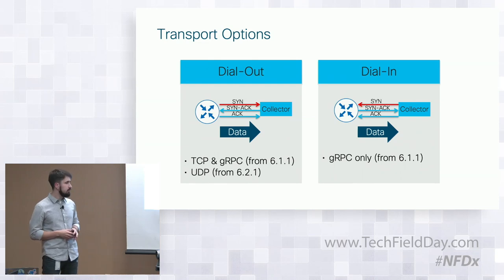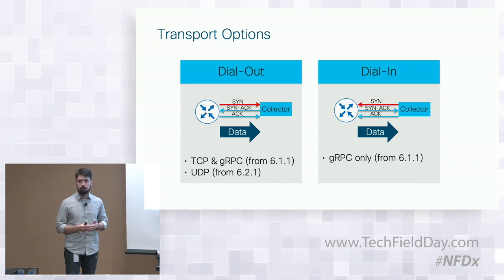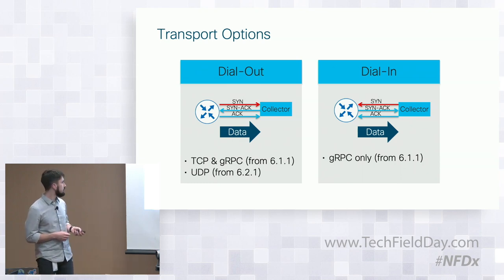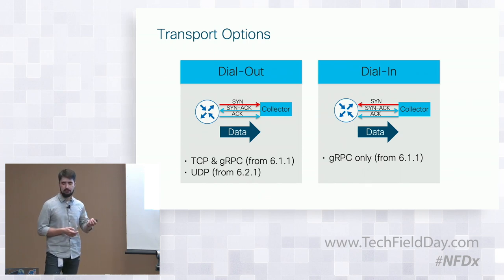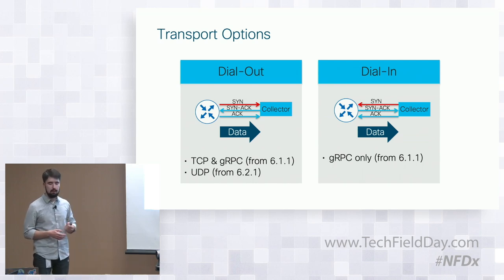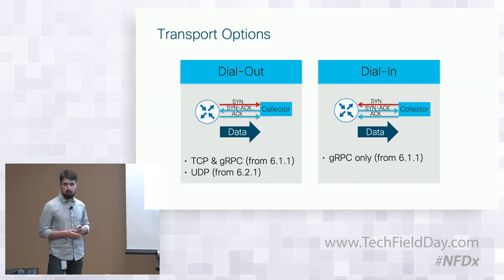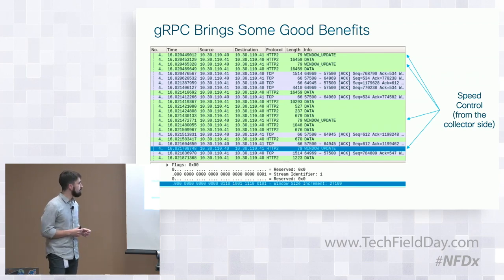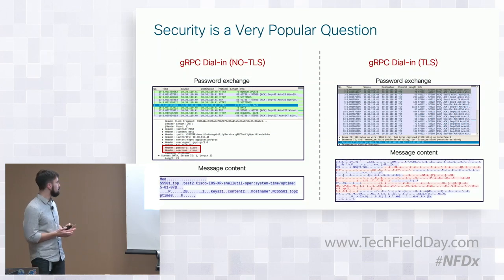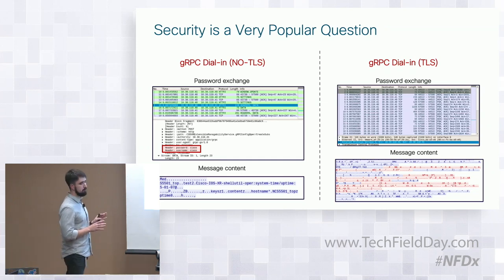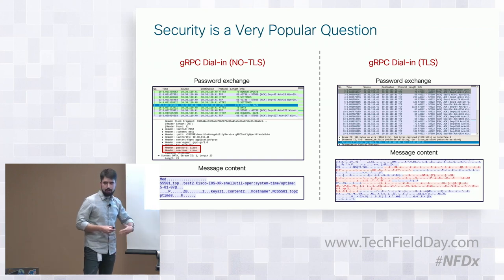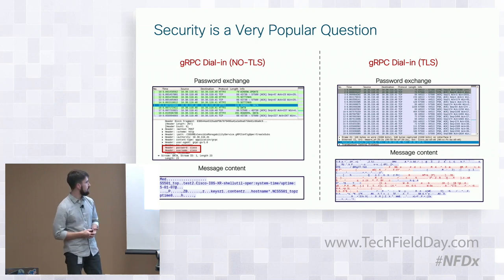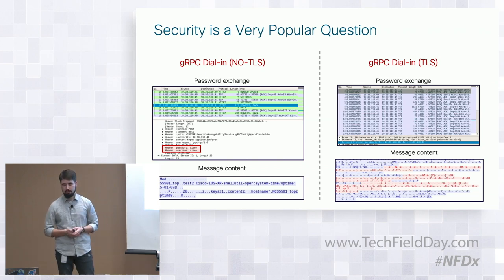With transport options, there is nothing new — we support UDP and TCP along with gRPC, and two methods for communication with devices: dial-out when a device initiates a connection, and dial-in if collectors start talking to our device. With gRPC, it brings some advantages — from the collector side, we can send window updates and optimize data transfer. Encryption is also available. If you disable TLS, all data and credentials are shared in plain text with no encryption, but TLS can be enabled and we'll see nothing in our message content — just encrypted bits and bytes.